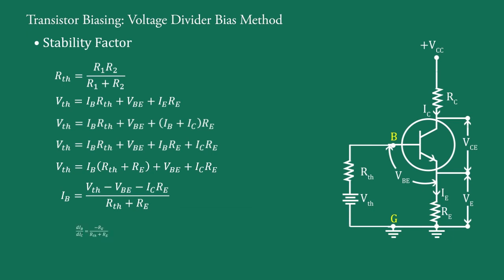By differentiating with respect to IC, we get dIB upon dIC equal to minus RE upon RTH plus RE.